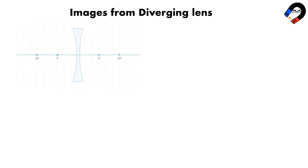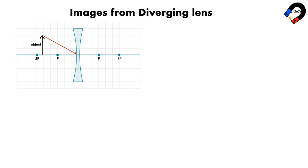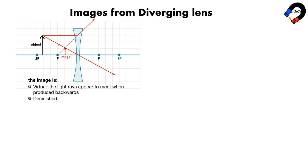Diverging lenses can also be used to form images, although the images are always virtual. If an object is placed further from the lens than the focal length f, start by drawing a ray from the top of the object through the center of the lens — this ray continues in a straight line. Next, draw a ray from the top of the object parallel to the axis; when it emerges from the lens it travels upwards away from the axis. Draw a dashed line continuing this ray downwards to the focal point f. The image is where these two rays appear to meet — it is virtual, diminished, and upright.